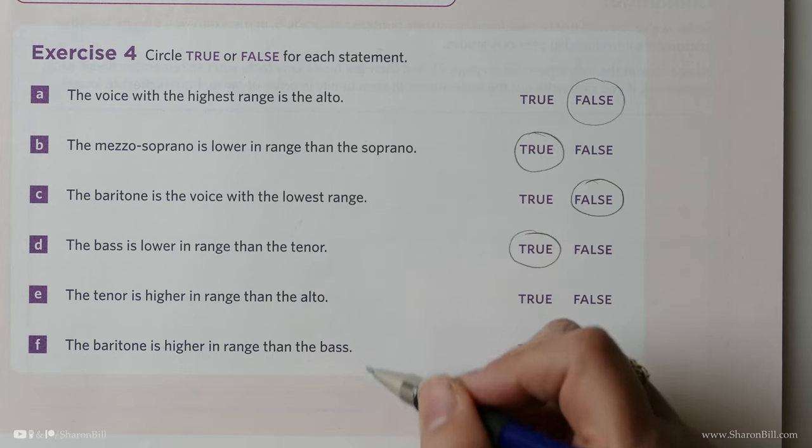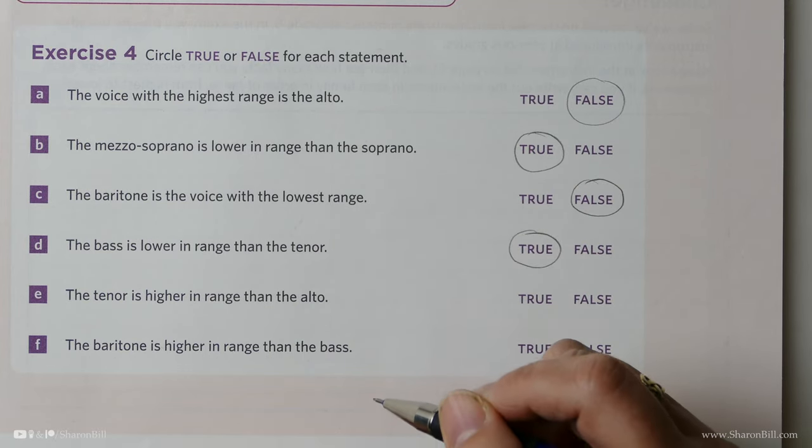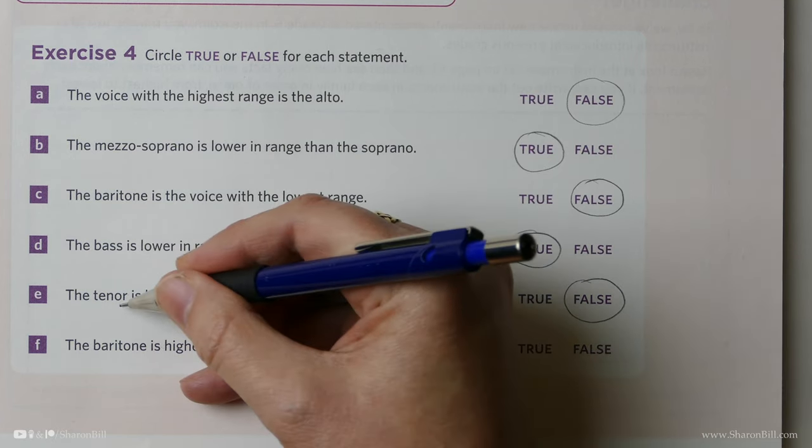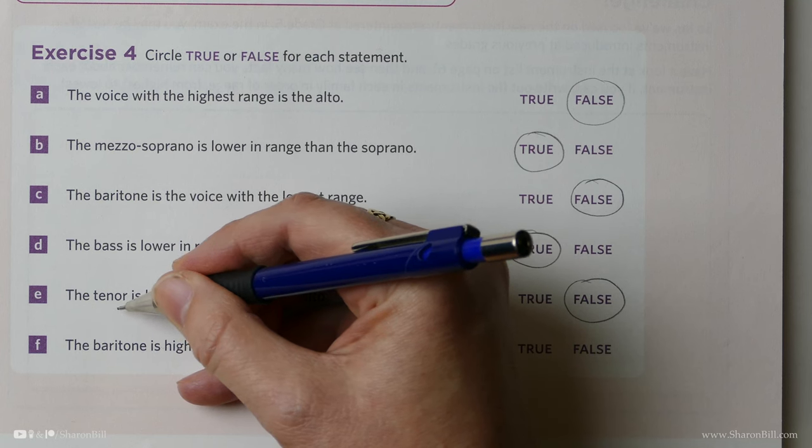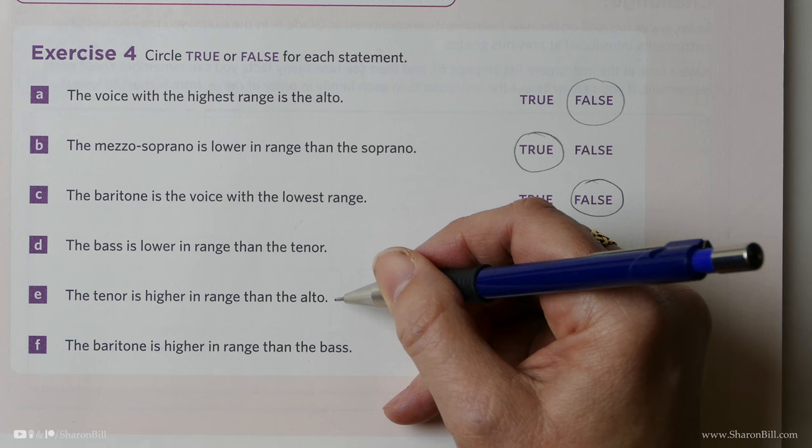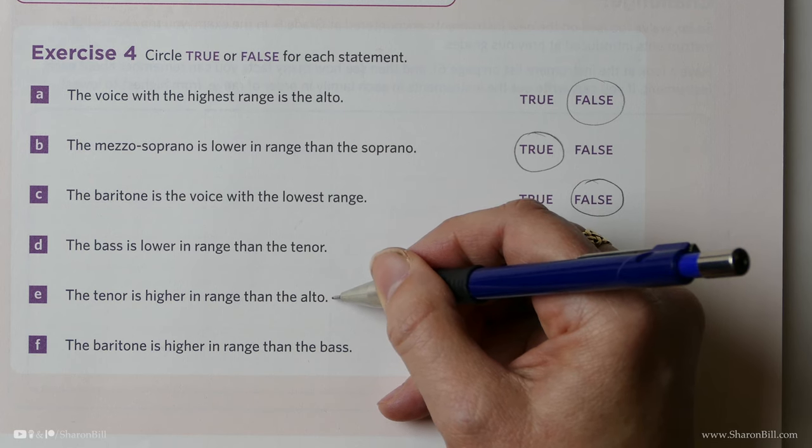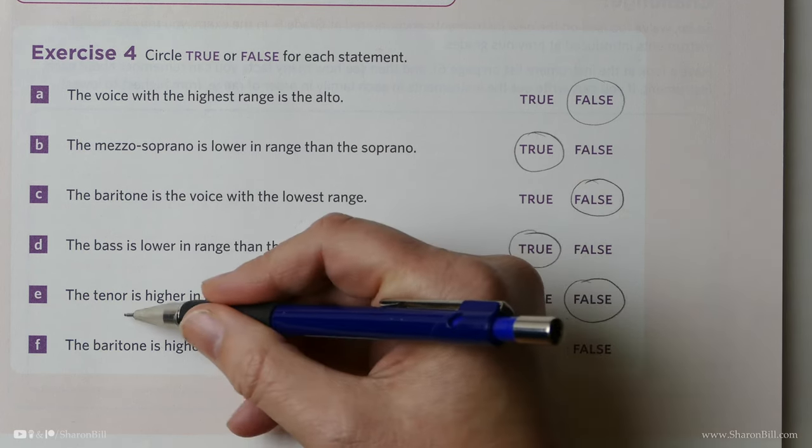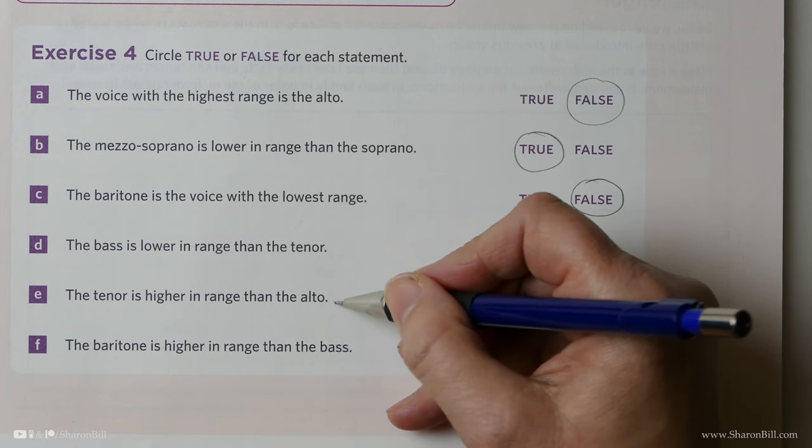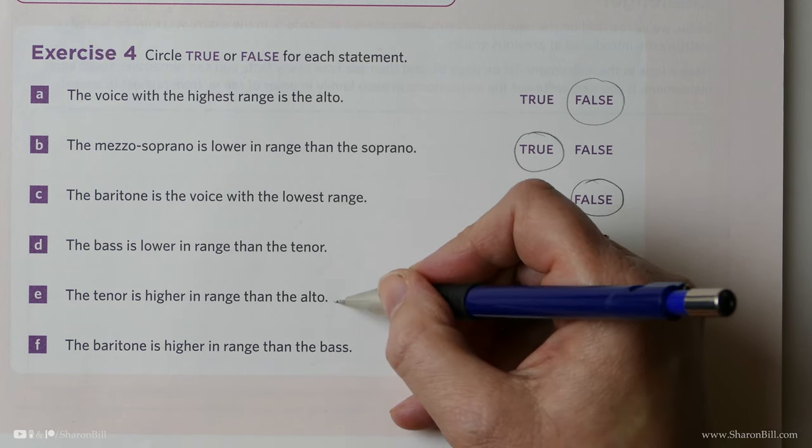Is it true or is it false that the tenor is higher than the alto? Well, that's false. It's the higher of the lower voices, but it's not higher than the alto. So the alto is a treble voice, it's the lower treble voice, and the tenor is the higher in the bass clef. We'll look more at the tenor in the next lesson.